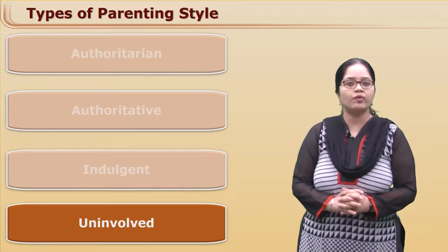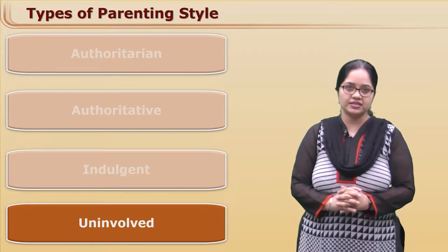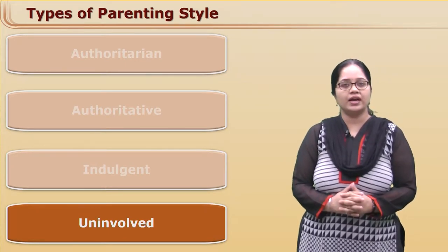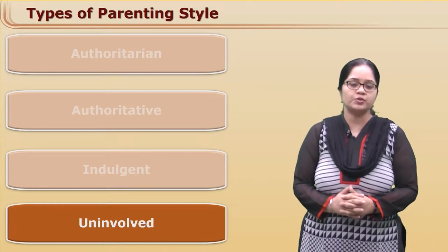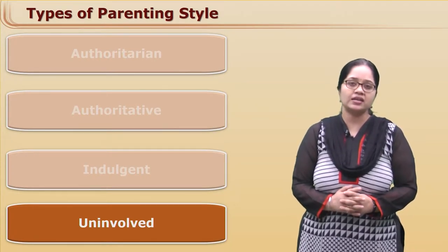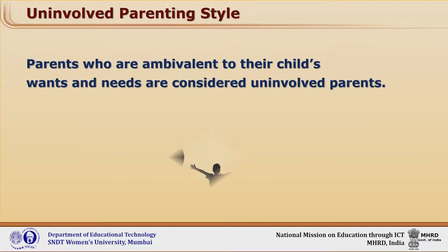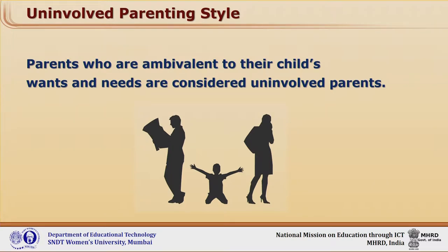As we are discussing parenting styles, according to Baumrind, the fourth type of parenting style is uninvolved parenting style. Looking at the word itself, we can make out the uninvolvement of the parent, which means that parents are not actively involved with the child. Here is an example of a child asking something to the mother and the mother is saying 'right now I'm very busy,' so the mother is not paying attention to what the child is asking for.